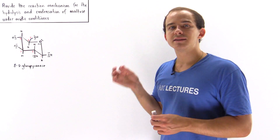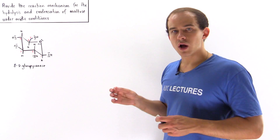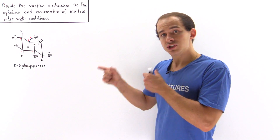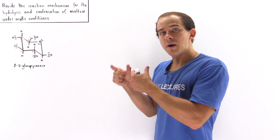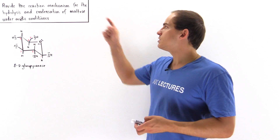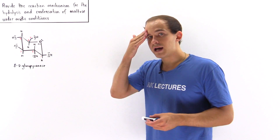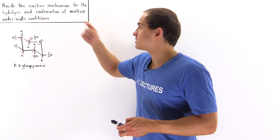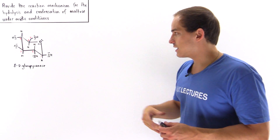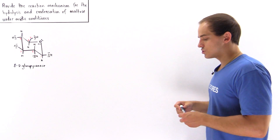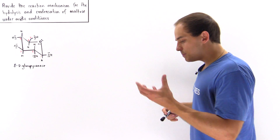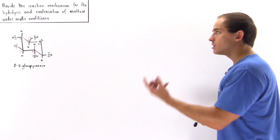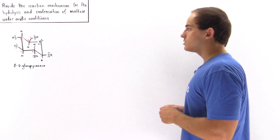Maltose is a disaccharide. We take two D-glucose molecules and combine them to form maltose, and this combination is known as a condensation reaction. So let's begin by providing the condensation mechanism of maltose.